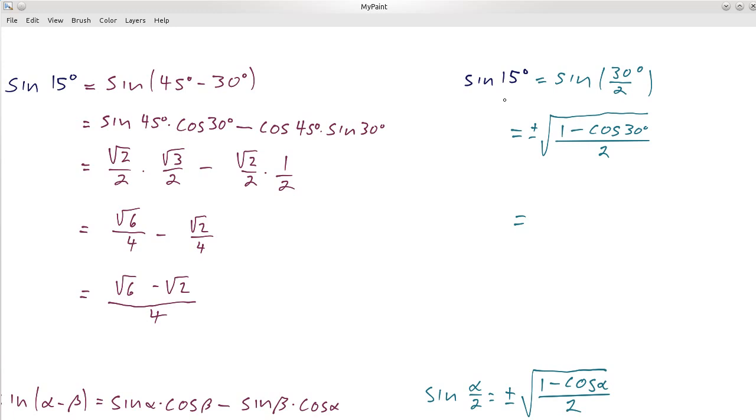So if we go through here, this is equal to plus or minus the square root of 1 minus cosine of 30 degrees divided by 2. Now, should it be plus or should it be minus? Well, we're looking for sine of 15 degrees. 15 degrees is in the first quadrant and sine is positive. So it's not the minus, it is actually the plus. So we get the square root of 1 minus cosine of 30 degrees is the square root of 3 over 2. And then divided by 2.